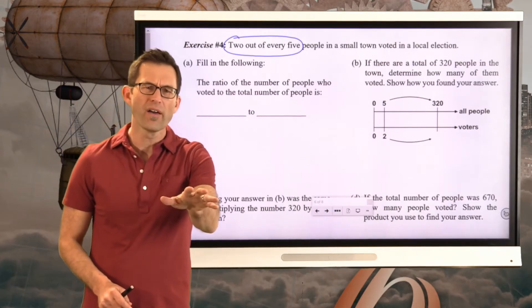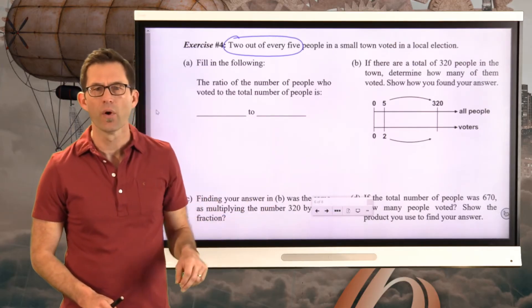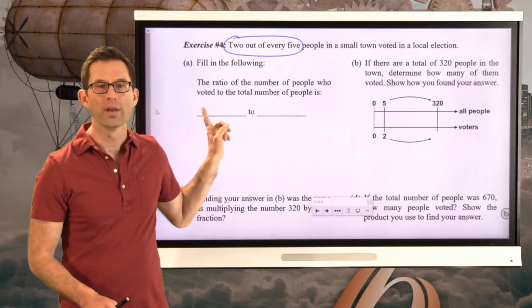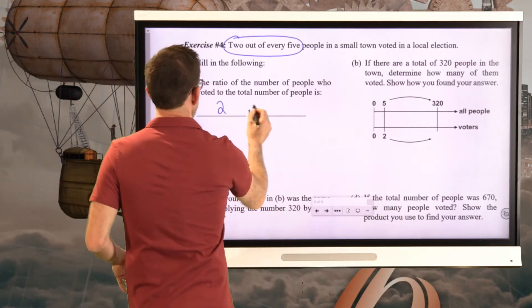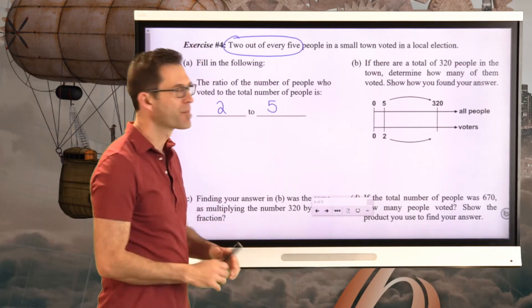Well, it's pretty simple. It says two out of every five. You oftentimes hear things or ratios phrased in that way. Two out of five, especially when you're comparing a part to a whole. For every five people in the town, two of them voted. So the ratio of the number of people who voted to the total number of people, that's just two to five.